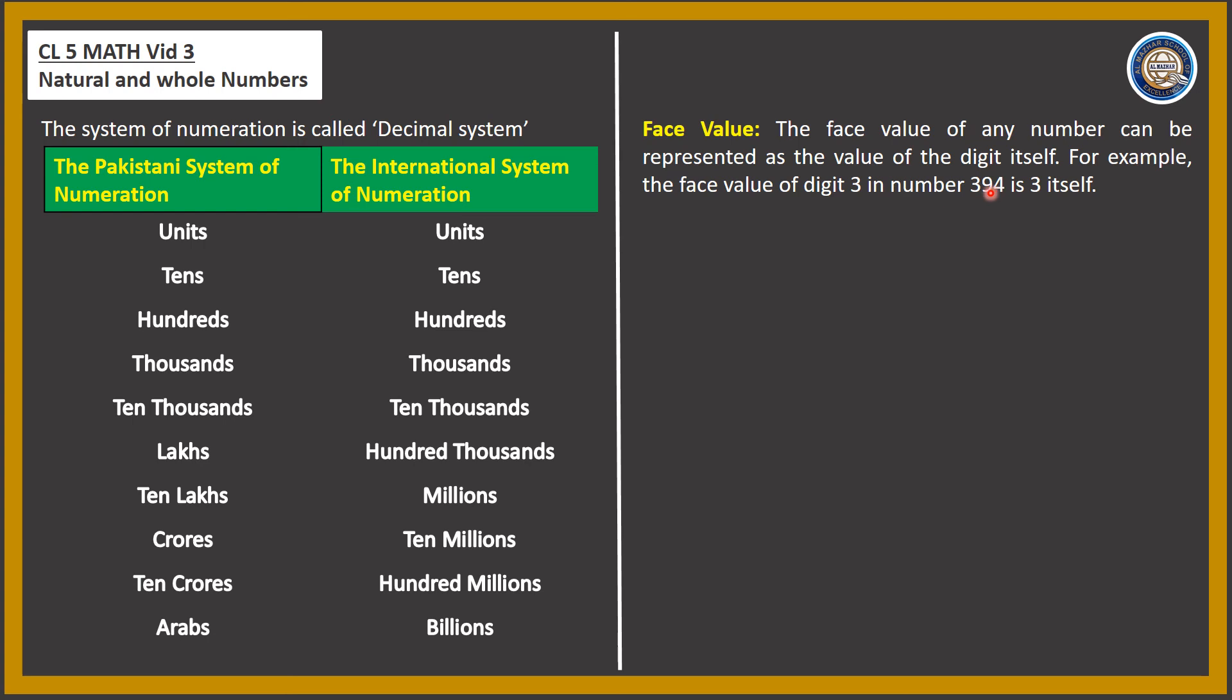Now, place value. Place value represents the position of a digit in a number. For example, in the number 394, the place value of the digit 3 is in the hundreds place, so 3 × 100 = 300. The face value is only 3, but the place value is 300.